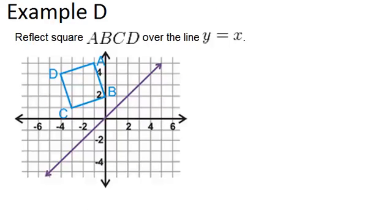In example D, it says reflect square ABCD over the line Y equals X. So with a diagonal line like this, you have to be careful that when you're counting how far away your points are, that you are counting along a line that's perpendicular to the line you're reflecting across.